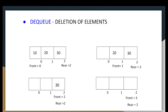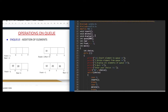The second operation is Dequeue, which means deletion of elements. For example, if the queue is full, the first element deleted will be 10 because 10 was the first element added. Queue works on the principle of First In First Out, so 10 was added first and will be deleted first. The second element added was 20, so 20 will be deleted after 10, and lastly 30 will be deleted. We use front and rear indexes to indicate positions in the queue.